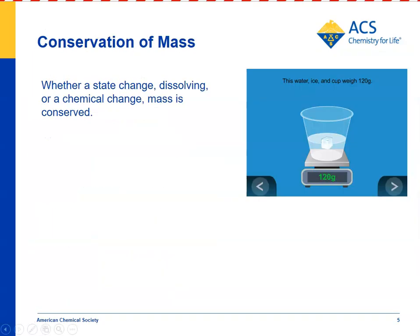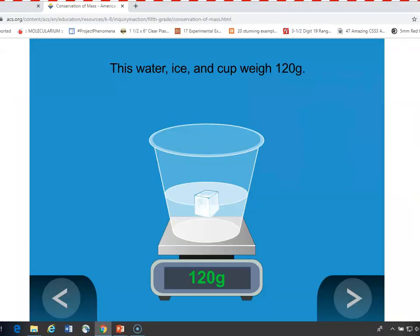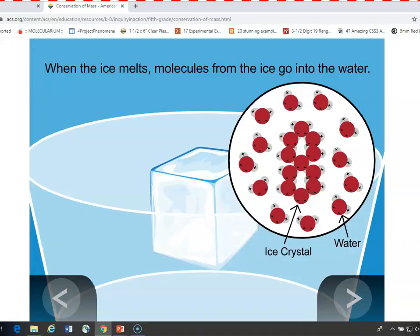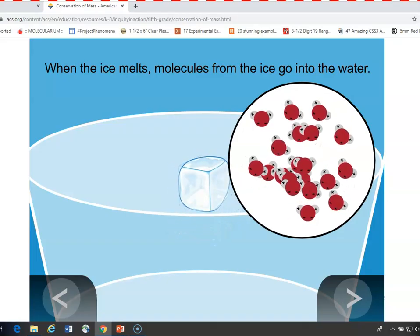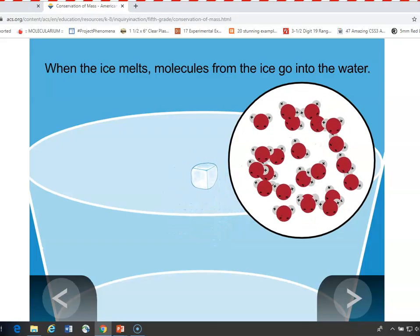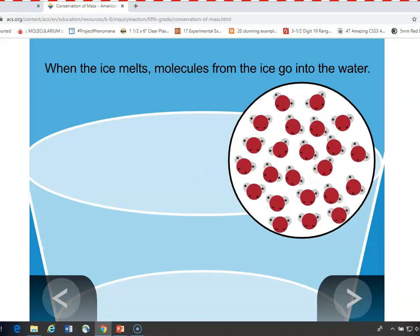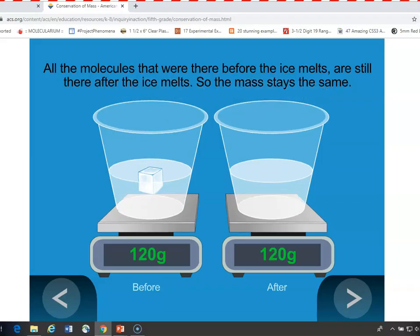Here we have an animation to help kids understand, on the molecular level, why the mass of the reactants always equals the mass of the products. We see that the cup plus the water plus the ice cube weighs 120 grams. You can show kids that the ice cube is made of water molecules arranged in a crystal structure. When the ice melts, it's just the water molecules changing from a crystal to a looser structure as a liquid — they went from solid to liquid, so it has the exact same mass. And it does: the melted ice plus the water plus the cup is exactly the same as before.